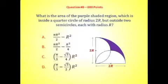What is the area of a purple shaded region, which is inside the quarter circle of radius 2r, so that's the big circle, but outside of two semicircles, each with radius r. That purple region is, and each has radius r.